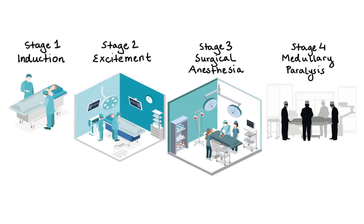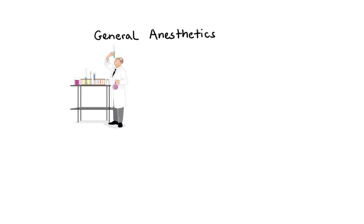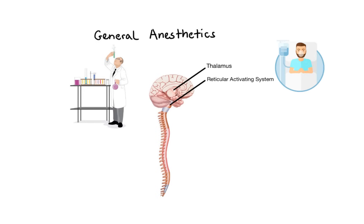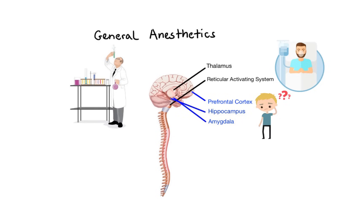The mechanism of action of general anesthetics is not entirely clear. Early theories focused on a single common path of action for all anesthetics, but over time it has become increasingly apparent that multiple sites and different mechanisms are most likely responsible for their effects. At the macroscopic level, action on the thalamus and reticular activating system leads to reversible loss of consciousness; action on the hippocampus, amygdala and prefrontal cortex causes amnesia; and action on the spinal cord is responsible for immobility and analgesia.